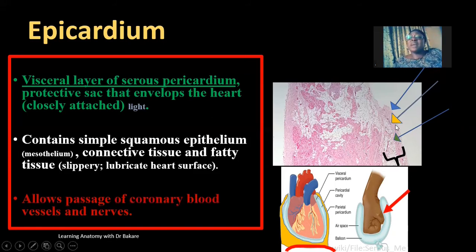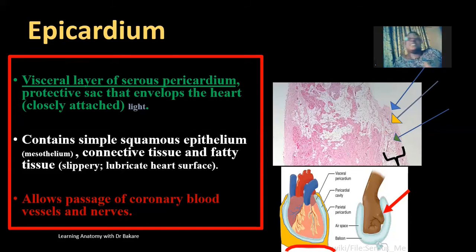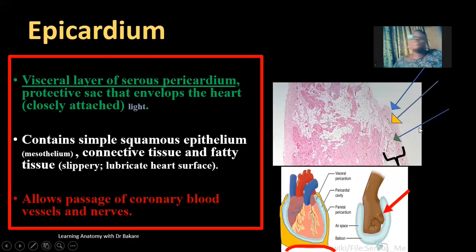Also within the epicardium, we have the passage of the coronary blood vessels and nerves. The coronary blood vessels are seen on the surface of the heart and provide blood supply to the heart's tissue. The coronary artery branches from the ascending aorta and runs through the surface of the heart within the epicardial layer.